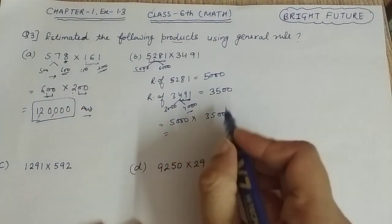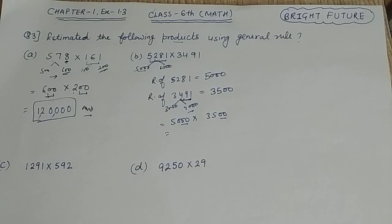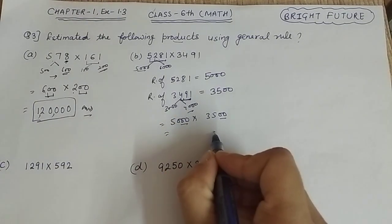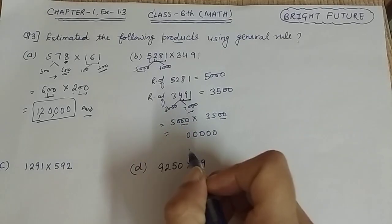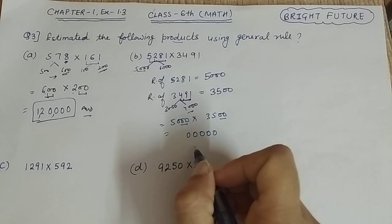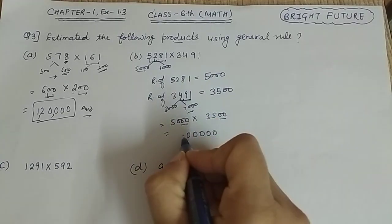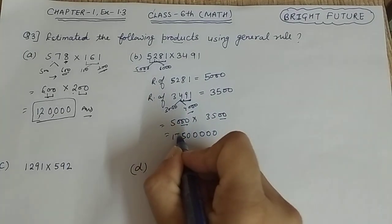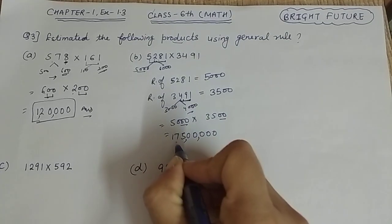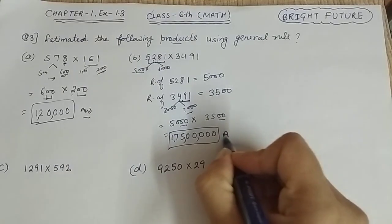Now you have to do multiplication. 5 times 5 is 25, then 5 times 3 is 15 and 2 is 17. So this will come. This will be our answer for part B. This is 17,500,000.